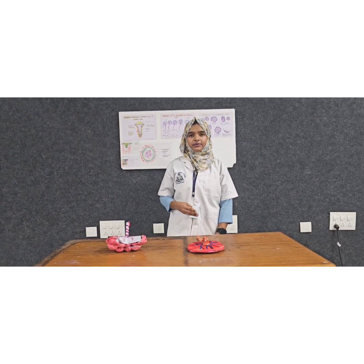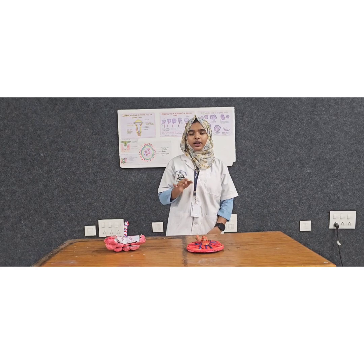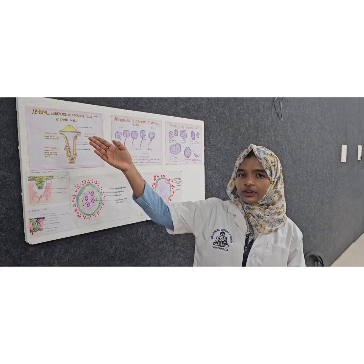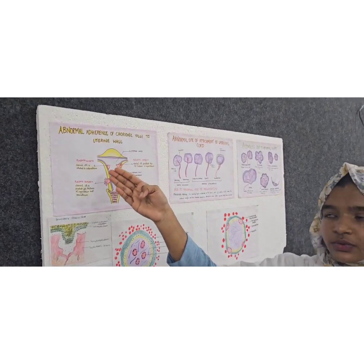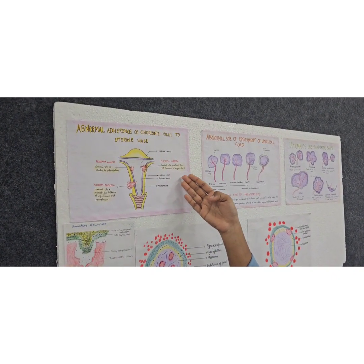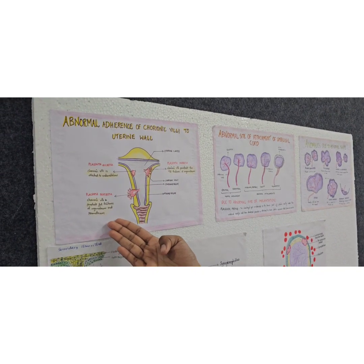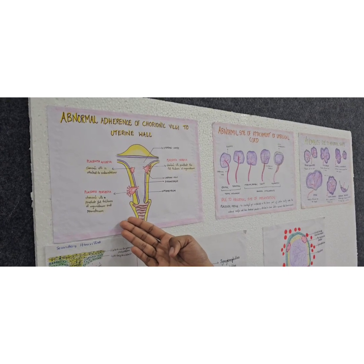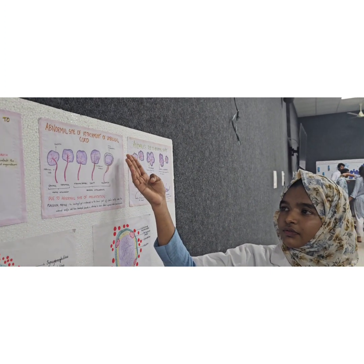Anomalies of placenta: congenital anomalies are of three types. The first is due to abnormal adherence of chorionic villi to the uterine wall. When the chorionic villi attach to the endometrium, it is called placenta accreta. When the chorionic villi penetrate through the full thickness of the myometrium, it is called placenta increta. When the chorionic villi penetrate through the full thickness of the myometrium and perimetrium, it is called placenta percreta. The second anomaly type is due to abnormal shape, and the third is due to abnormal site of attachment of the umbilical cord to the placenta.